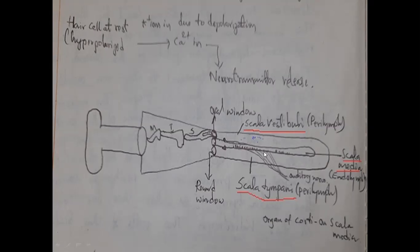The internal ear is connected to the middle ear through two main openings: the first is the oval window and the second is the round window. Both the oval window and round window are membrane-bound — they are covered by a membrane which is essential during hearing.